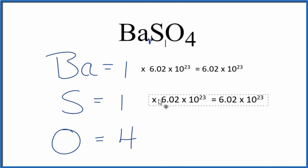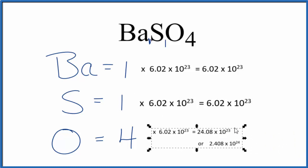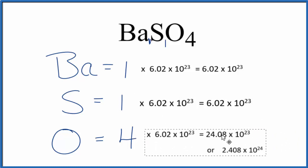Since we only have one sulfur atom, same thing, multiply by Avogadro's number, and then oxygen, we have those four oxygen atoms, so we can multiply that by Avogadro's number as well. And four times Avogadro's number, that would give us the number of oxygen atoms in barium sulfate.